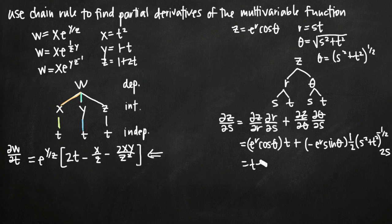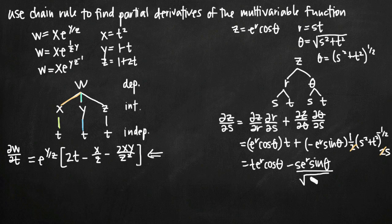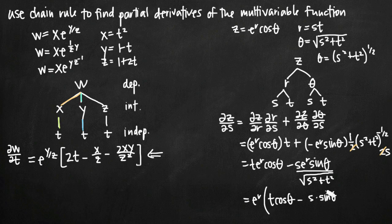Simplifying, we get t·e to the r·cosine θ. In the second term, the 2 in the denominator and numerator cancel, leaving minus s·e to the r·sine θ, divided by the square root of s² + t². Factoring out e to the r, we get e to the r times the quantity (t·cosine θ minus s·sine θ), divided by the square root of s squared plus t squared. That's our final answer for the partial derivative of z with respect to s.